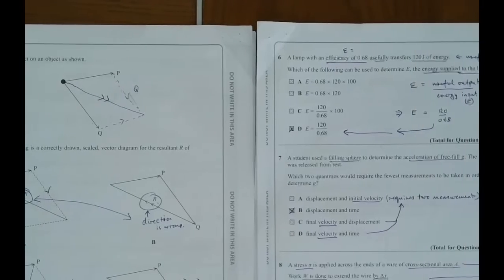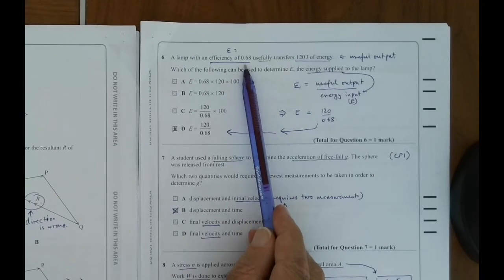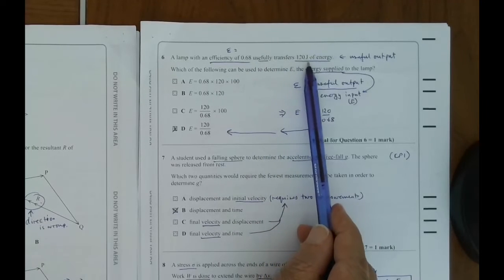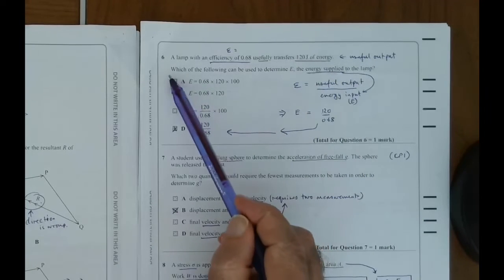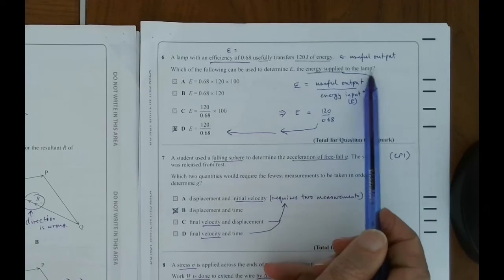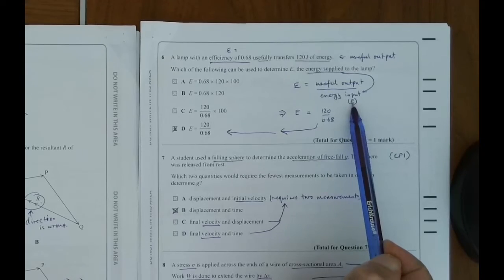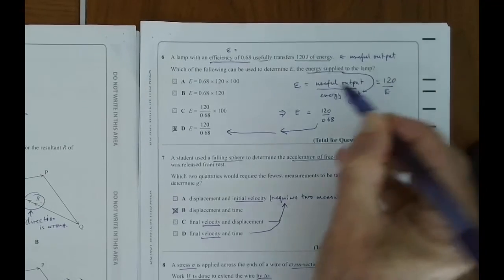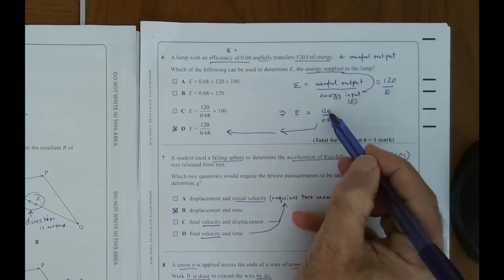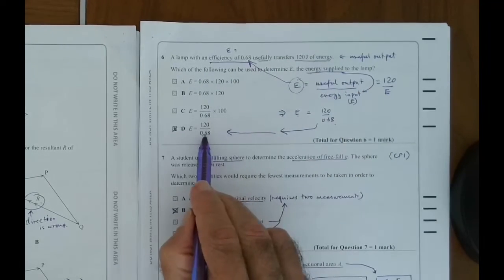The next question is question 6. Question 6 is about efficiency. So they've given us the efficiency as 0.68, which is 68%. Usefully transfers 120 joules of energy. So usefully transfers means this is our useful output, is 120 joules. Which of the following can be used to determine E, the energy supplied to the lamp? Well, if you know efficiency is useful output over energy input, which is the energy supplied by the lamp, which is E, you can say that this would be 120 over E. So changing the subject, E would be 120 divided by efficiency, which is 0.68. So once you divide 120 by 0.68, the answer will be D.